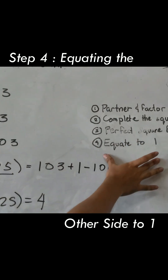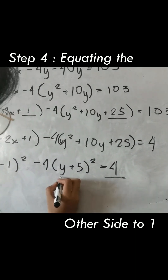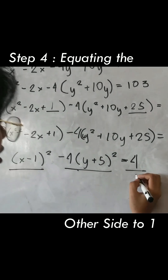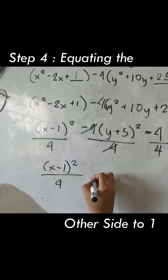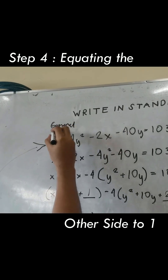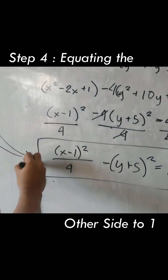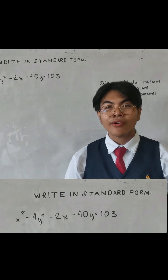Equating the other side into 1 — divide all terms by 4. Just cancel, equal to 1. General form converted into standard form.